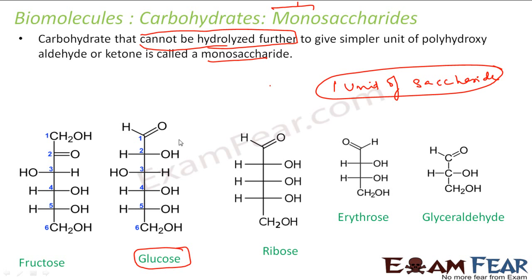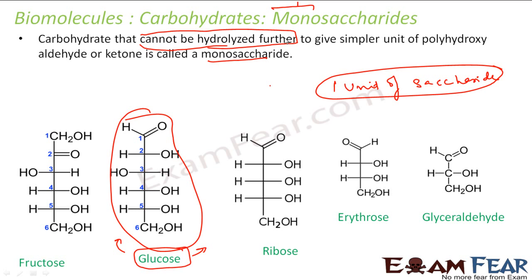Glucose is a monosaccharide and is nothing but an energy source in your body. Instead of taking a polysaccharide or disaccharide and waiting for the body to break it down using enzymes, you directly take glucose and get energy. So glucose is an instant energy drink. That's why you remember: glucose is a monosaccharide because glucose is an instant energy drink. Monosaccharide means one unit of saccharide — a carbohydrate that cannot be hydrolyzed further.